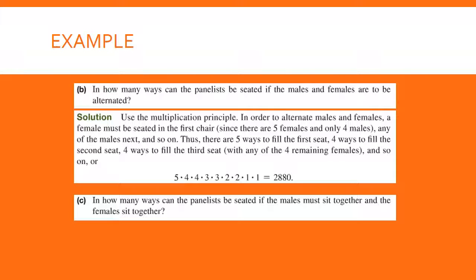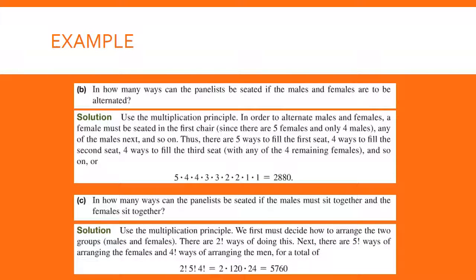Question C: in how many ways can the panelists be seated if males must sit together and females must sit together? You first decide how to arrange the two groups — all guys on the left and girls on the right or vice versa — giving two factorial ways. Then you figure out how many ways to arrange all the girls and all the guys: 2 factorial times 5 factorial times 4 factorial, which gives 5,760.